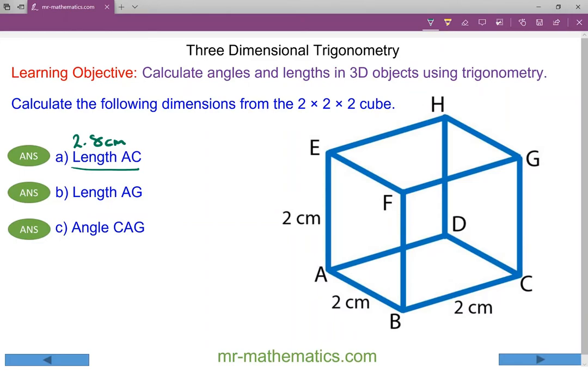Moving on, we're going to calculate the length AG and again we're going to visualize AG as a line in a right angle triangle where the right angle now is at C because we have a horizontal plane intersecting with a vertical plane. So we have our right angle triangle.